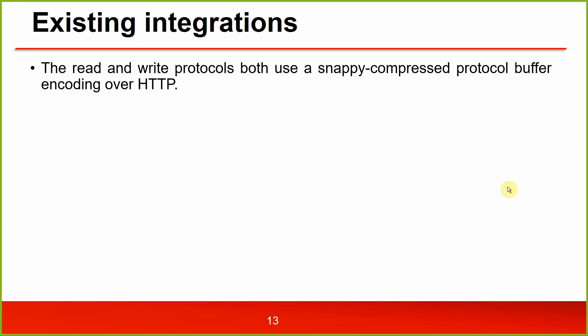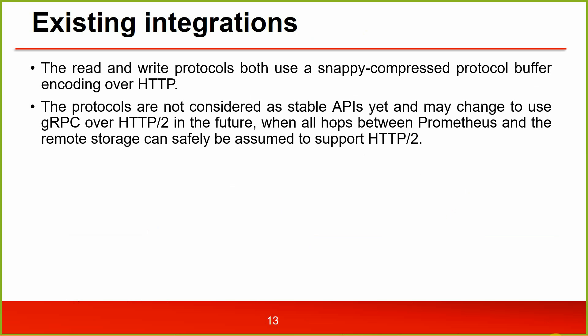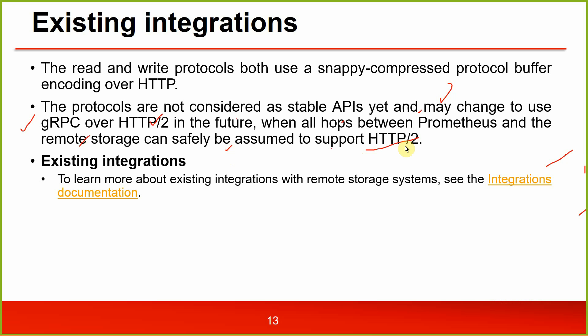Existing integrations: the read and write protocols both use a snappy-compressed protocol buffer encoding over HTTP. The protocols are not yet considered a stable API and may change to use gRPC over HTTP/2 in the future, when all hops between Prometheus and the remote storage can safely be assumed to support HTTP/2. Many existing integrations are available — refer to the integration documentation for more details.